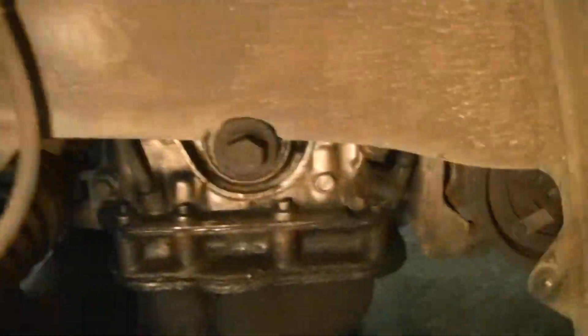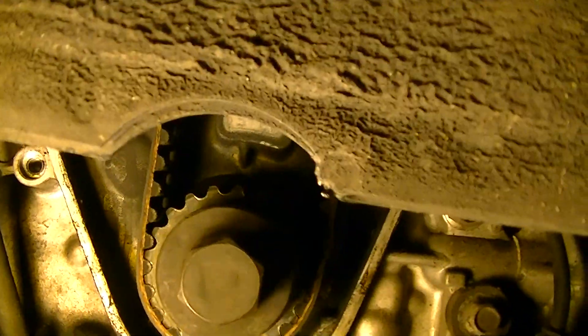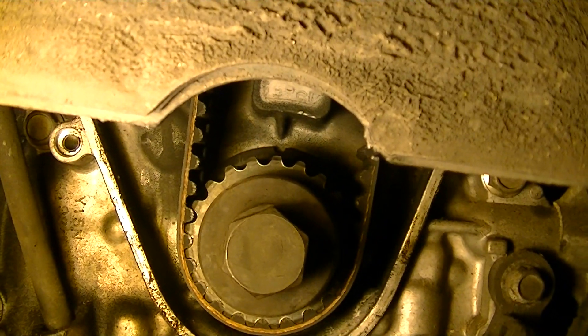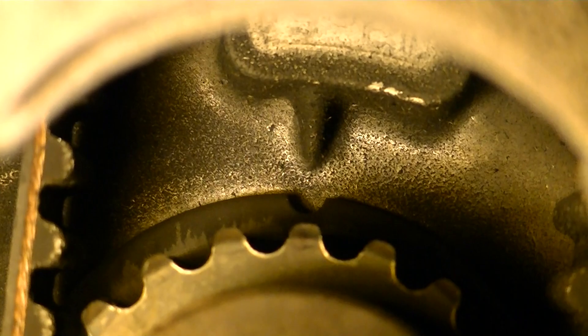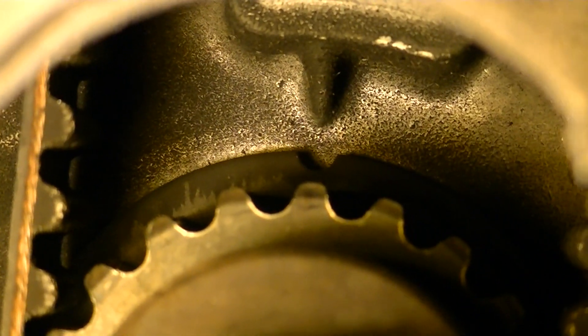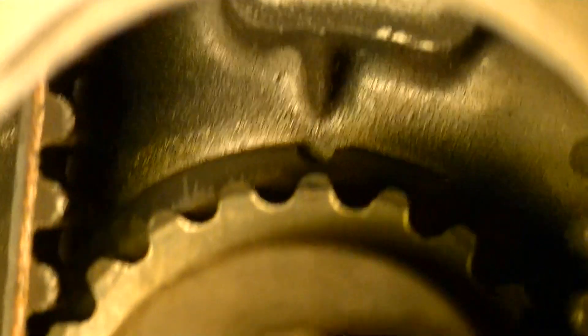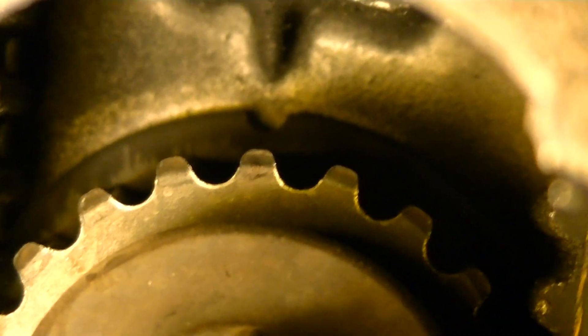And then one more thing, getting a look at the crankshaft timing mark. Right there, there's a little cast pointer behind the sprocket and the sprocket has a little half round shape cutout. Those two should be lined up.